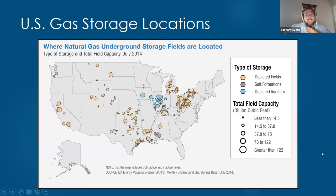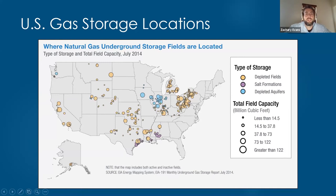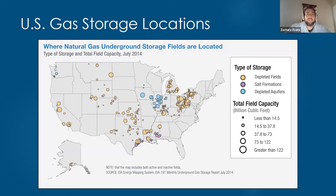Looking at the U.S., here's where all the storage facilities are located by type. Most of the storage capacity is up in the Northeast — depleted fields in Michigan, New York, Pennsylvania, Ohio, and West Virginia. You also see a lot of salt caverns along the U.S. Gulf Coast. And there's another big cluster in the center of the map in Illinois, which are the depleted aquifers. The Illinois Basin is the geologic area providing most of the aquifer storage in the country.